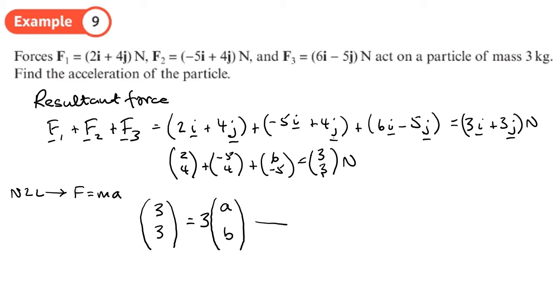Now we don't know the acceleration, let's just call that a, b. For this to balance, both a needs to equal 1 and b needs to equal 1. So if we want our acceleration in ij form like this using unit vectors: 1i plus 1j meters per second squared.